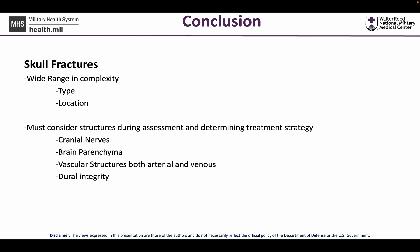In summary, with skull fractures there is a wide range in complexity. We can discuss the type and location of fracture, but in addition to thinking about the bony injury, we have to consider the underlying cranial nerves, brain parenchyma, the vascular structures both arterial and venous, and the dural integrity as we do our initial and follow-on assessments and determine a treatment strategy.